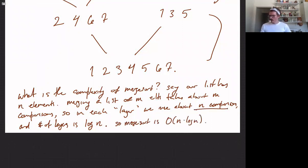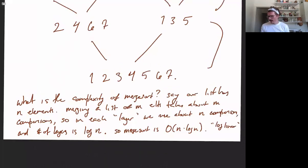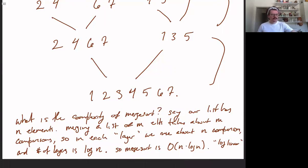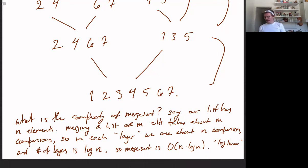We get O(n log n) by multiplying the number of comparisons in each layer times the number of layers. This is log-linear time, as it is often called. A quick note: O(n log n) is actually the best you can possibly do, at least for a comparison sort, which is the category this falls into. So merge sort achieves the best possible time. Although in practice you care about constants being ignored, and also details like how algorithms work with different data structures.